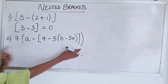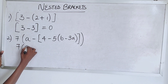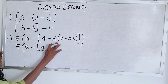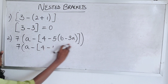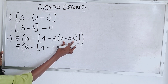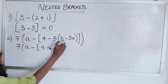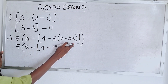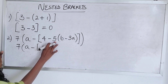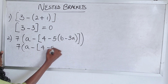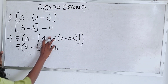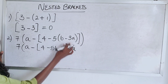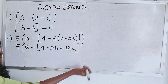So we have seven a minus... now we need to open this inner bracket. Five will open this bracket, because b and a are two different letters and can't be combined. So five times b gives us five b; minus five times negative b gives us minus five b. Then minus times minus is plus, so five times 3a gives us plus 15a. We're done with this inner bracket, so we close the square brackets.